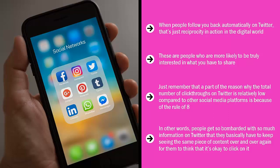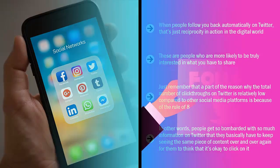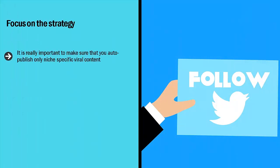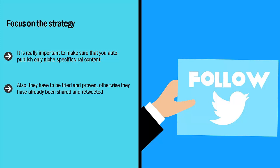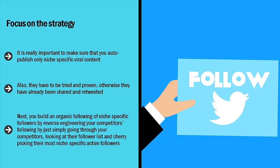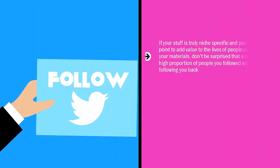Keep retweeting your stuff using tools like Hootsuite while at the same time directly following active followers of your competitors. It is really important to auto-publish only niche-specific viral content. Make sure all the curated materials you are producing are on point — they have to be niche-specific and tried and proven, meaning they have already been shared and retweeted because people are interested in this stuff. Build an organic following of niche-specific followers by reverse-engineering your competitors' following, cherry-picking the most niche-specific and active followers. If your stuff is truly niche-specific and adds value, a comparatively high proportion of people you followed will end up following you back.